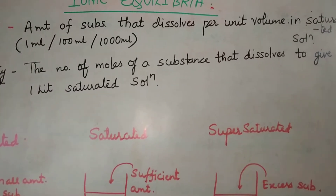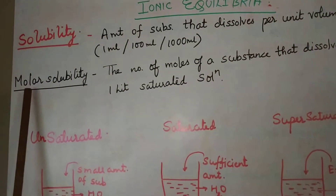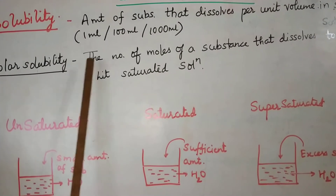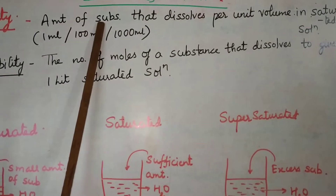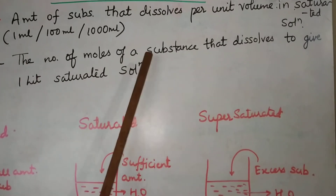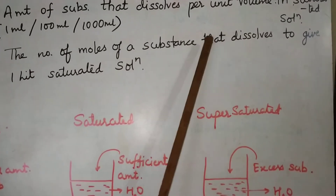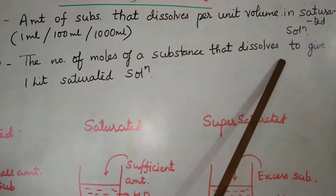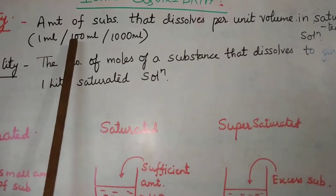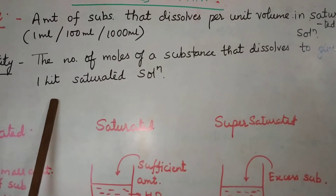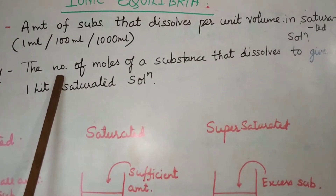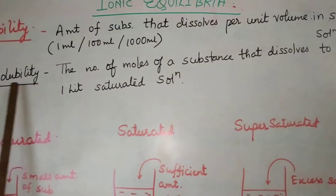Now come to molar solubility. The word 'molar' means you are going to make use of the term mole here. You define molar solubility as the number of moles of the substance that dissolves — that is needed to give a saturated solution. Here, the volume is fixed: it is 1 liter of solution. The number of moles of substance needed per 1 liter to form a saturated solution is said to be molar solubility.